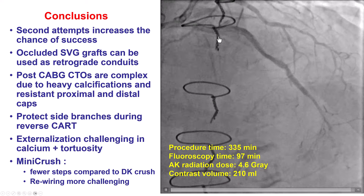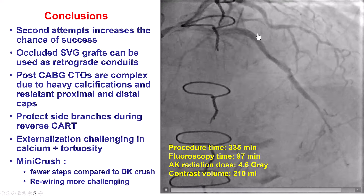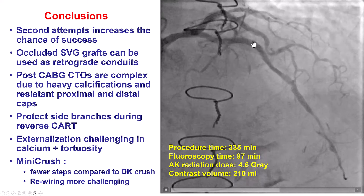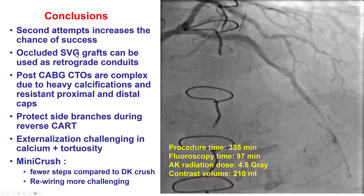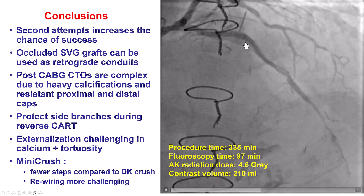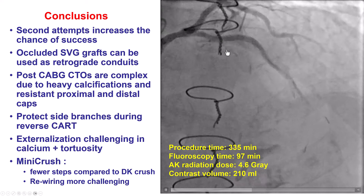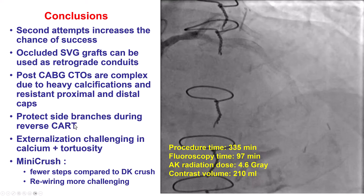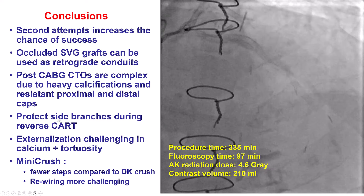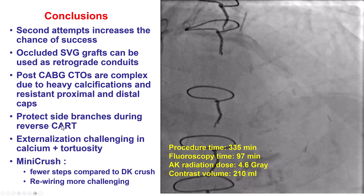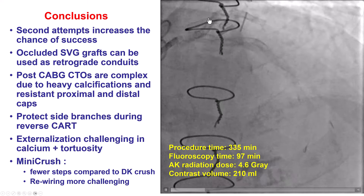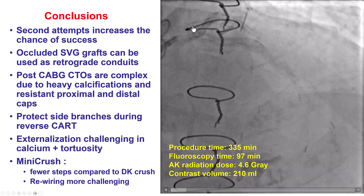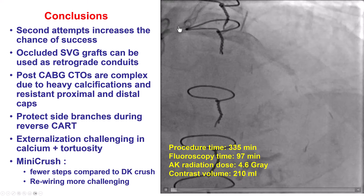In summary, this case shows that sometimes the second attempt can be successful. We used a similar approach to the first time, but the key difference was performing the guide extension reverse CART at a different location within the vessel. We used an occluded vein graft for retrograde access and had difficulty with reverse CART and externalization due to calcium and tortuosity. We did not protect the diagonal branch, which was lost — emphasizing the importance of protecting side branches during dissection re-entry. Finally, we performed bifurcation stenting using a mini-crush/T technique on the distal left main, which worked well given the nearly 90-degree angle and absence of significant ostial disease.